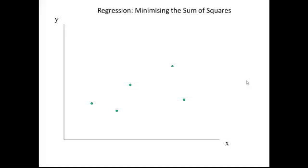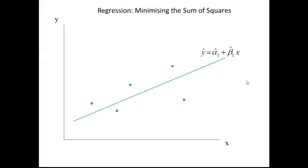What we're going to do is try to introduce a line — any line — that we might think minimizes the sum of squared residuals. The residuals are the distances from the points themselves to the line.